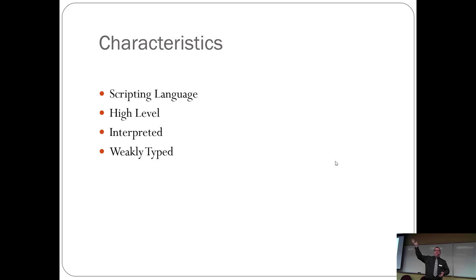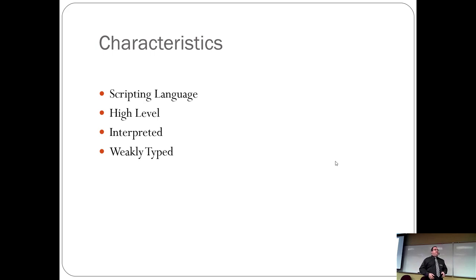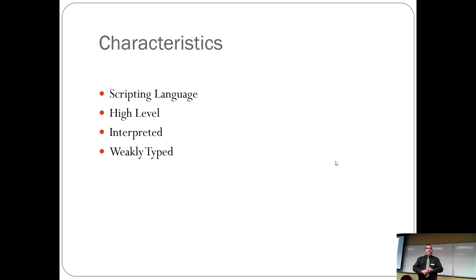Characteristics of a shell script: it's a scripting language, meaning it's not compiled. When you run the command, it tries to run everything inside it — it doesn't pre-parse like Java or compile to bytecode. It's a high-level language, not assembly. It's interpreted — similar to Python, PHP, and Ruby, which are also scripted interpreted languages.